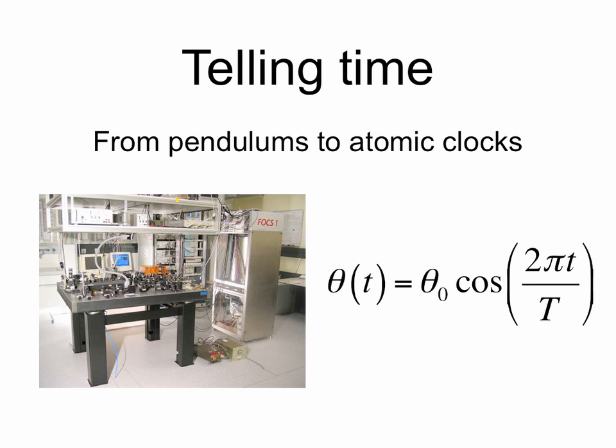From the dawn of time, trigonometry has been helpful in telling time, from sundials to pendulums to atomic clocks. Here's an equation for the position of a pendulum as a function of time, involving the cosine.